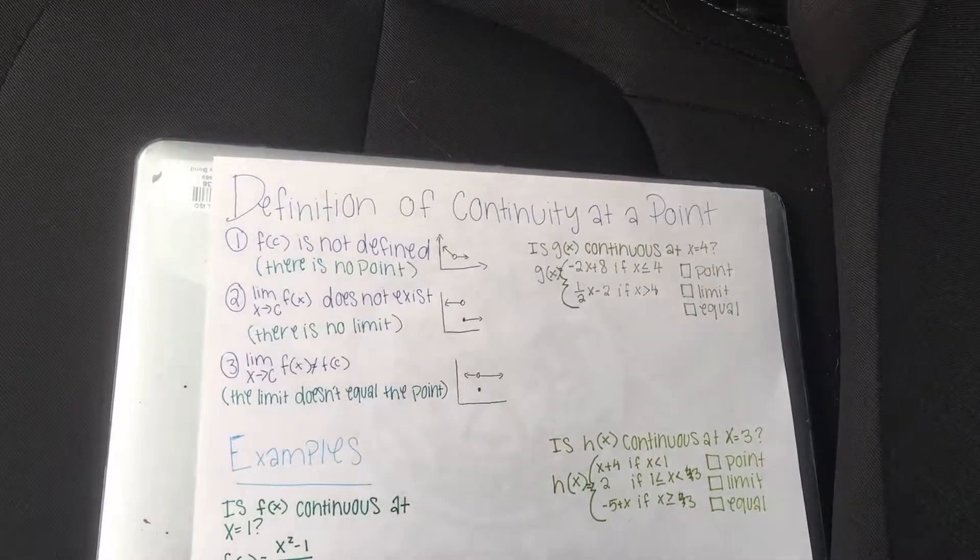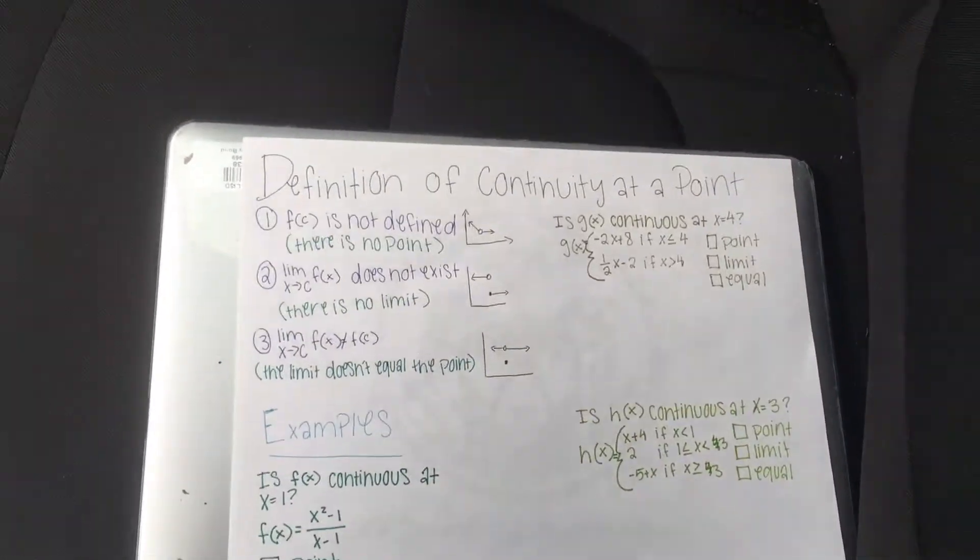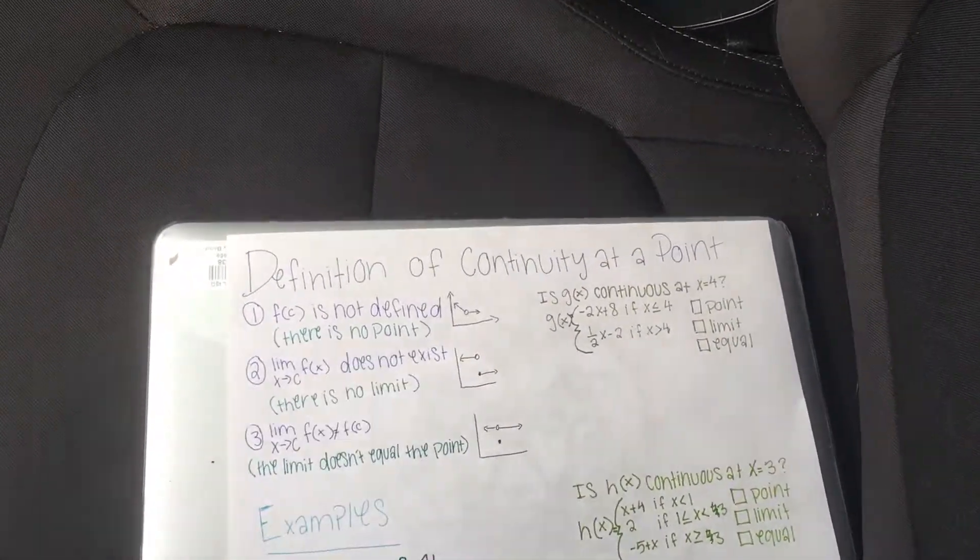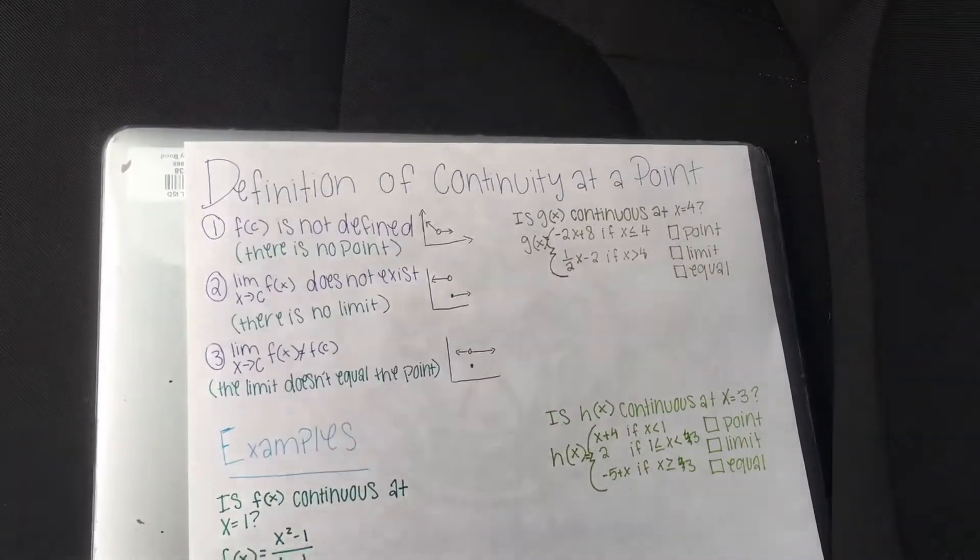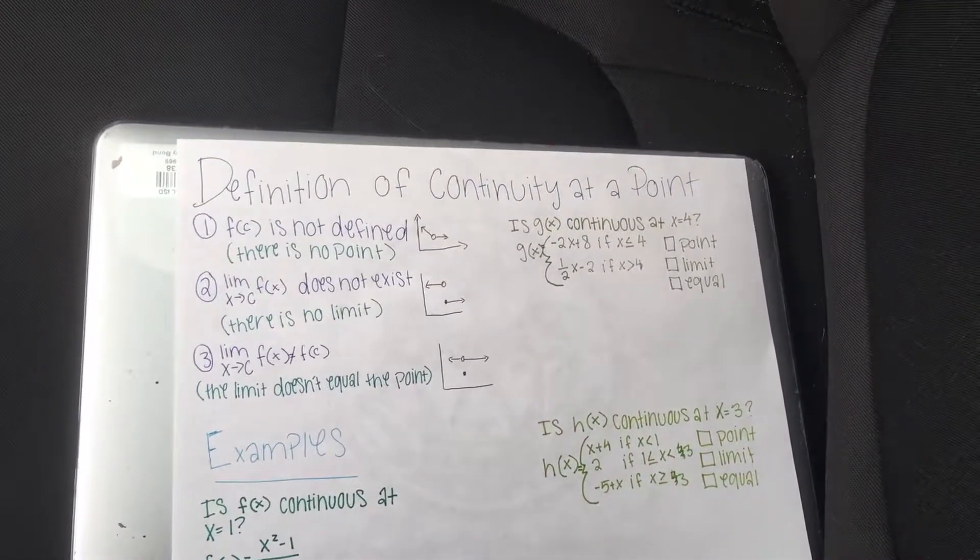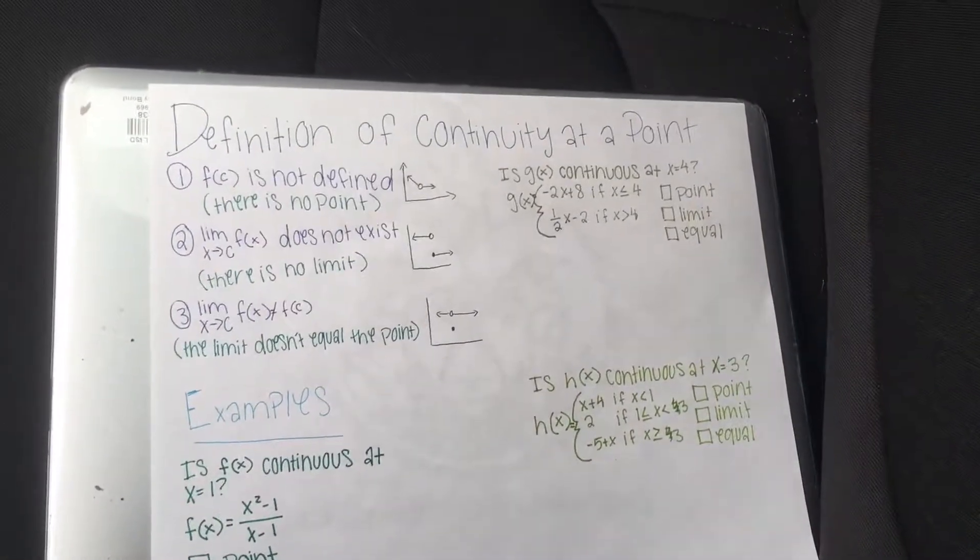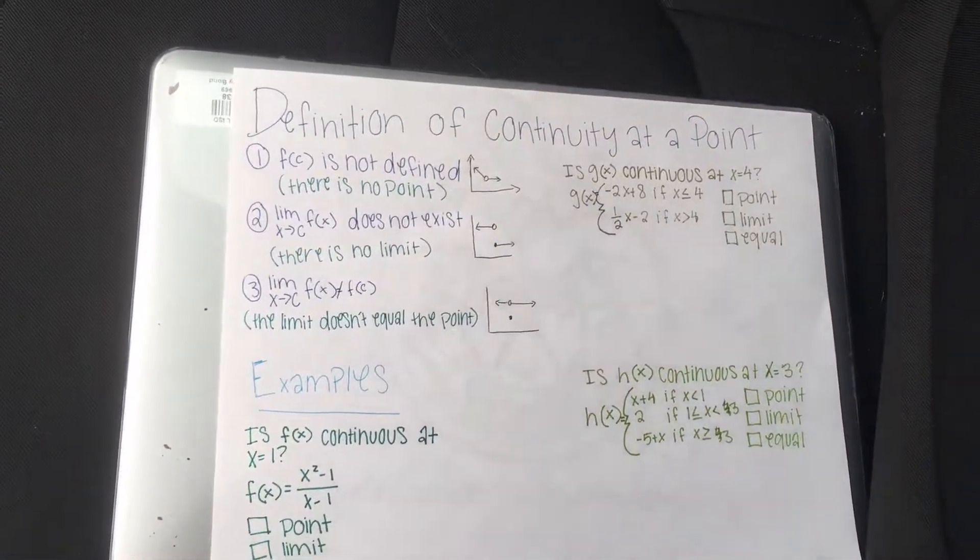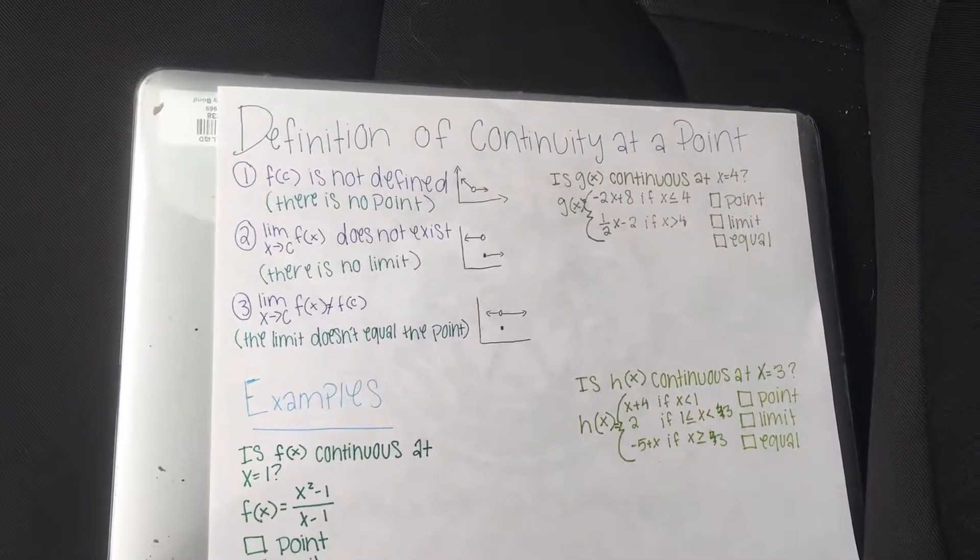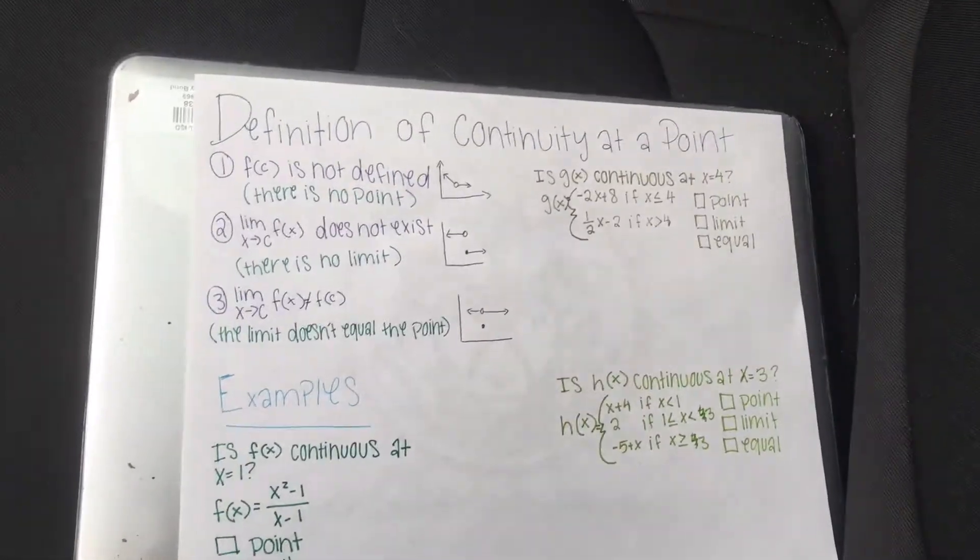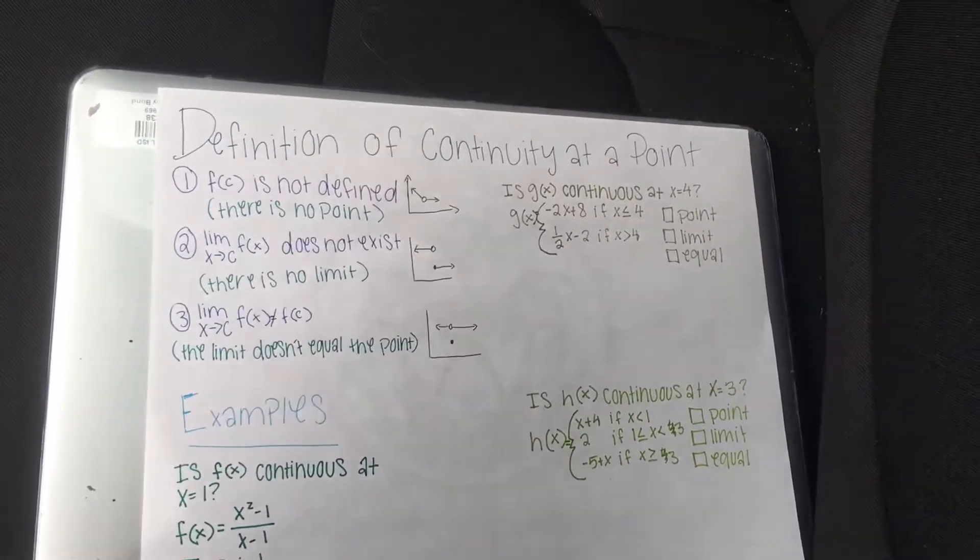We are going to be talking about the definition of continuity. Something that would make a point not continuous is if f is not defined, so there's no point like there's a hole or something like that. A second condition to make it not continuous is if the limit doesn't exist, so there's no limit. For example, if there was a jump then the limit would not exist. And then the third way that would make it not continuous is if the limit and the point are not the same.